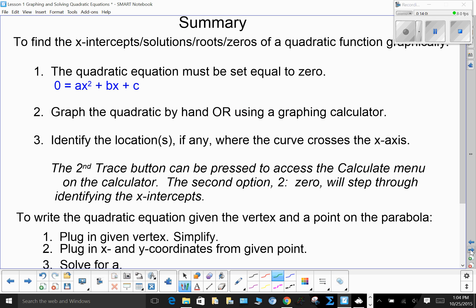In summary, for this first lesson of quadratics, to find the x-intercepts, solutions, roots, zeros of a quadratic function by graphing. Graphically, the quadratic equation must first be set to equal to 0. Then you graph the quadratic by hand or using a graphing calculator. You have to be able to do both. You will then identify the location or locations, if any, where the curve, the parabola, crosses the x-axis, crosses or touches. The second trace button can be pressed out to access the calculate menu on the calculator. The second option, 0, will step you through identifying the x-intercepts.